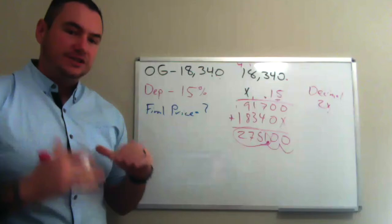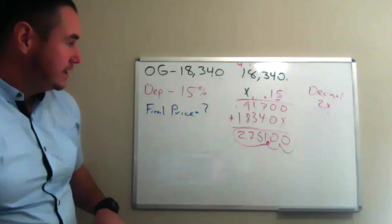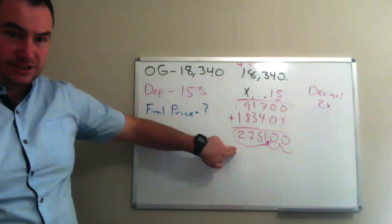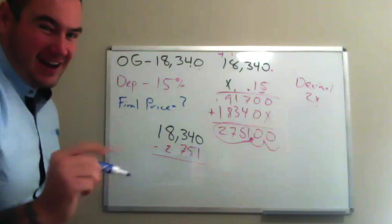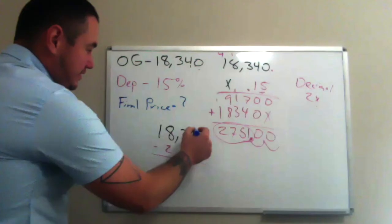And that's why these colors can help you, so you need to know what the question is asking. It's really important. So, to get the final price, we take the amount that we had, we subtract the depreciated amount to get that final amount. We had 18,340. The boat went down by 2,751, and now we're going to get that final price. We're right there at the end.